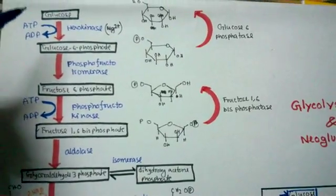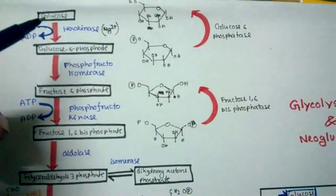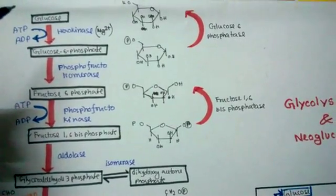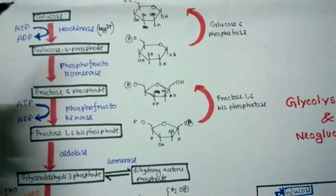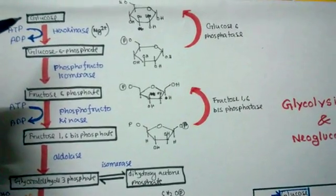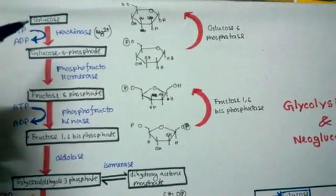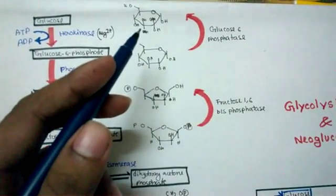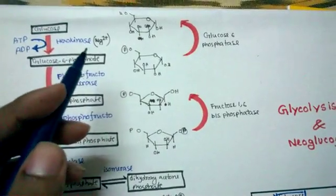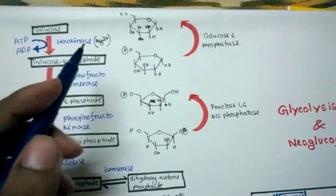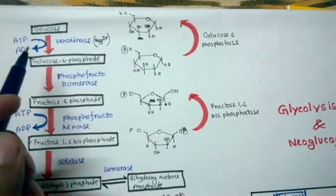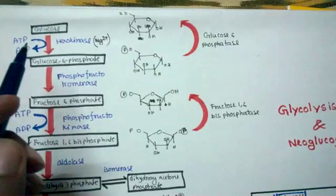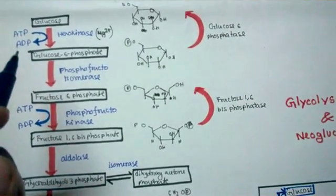The first substrate is glucose, and it's important to note that all enzymatic reactions of this metabolic pathway — glycolysis — take place in the cytoplasm of the cell. The first reaction is glucose converted to glucose-6-phosphate. The hexokinase enzyme, being a kinase, transfers a phosphate group from ATP to the sixth position of glucose, and simultaneously ATP is converted into ADP.